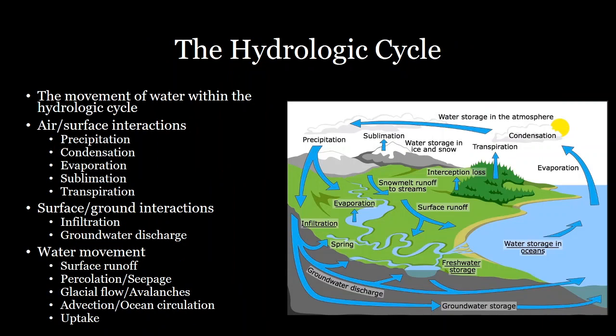There are a lot of different processes within the hydrologic cycle, and it's important to look closer at these different processes in order to understand how water flows through this system. We have processes that move water between the air and the surface of the earth, including precipitation, condensation, evaporation, sublimation — that's when a solid goes directly into a gas — and transpiration, which is the movement of water from plants directly into the atmosphere.